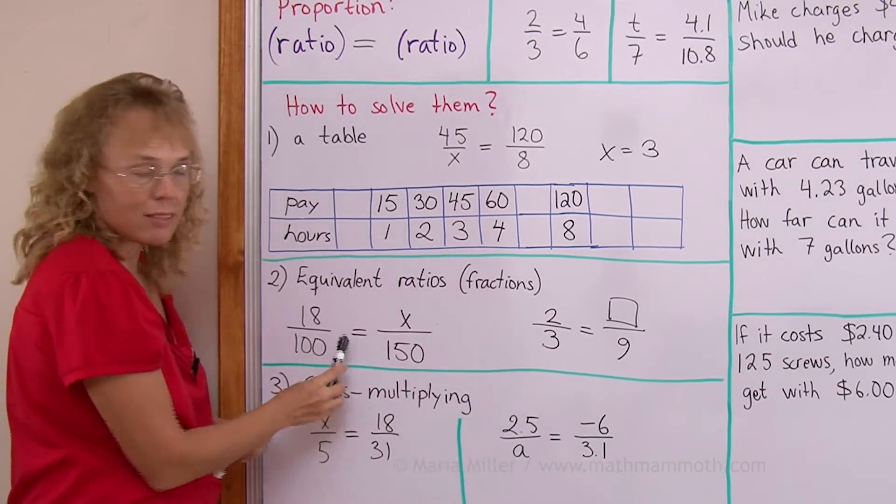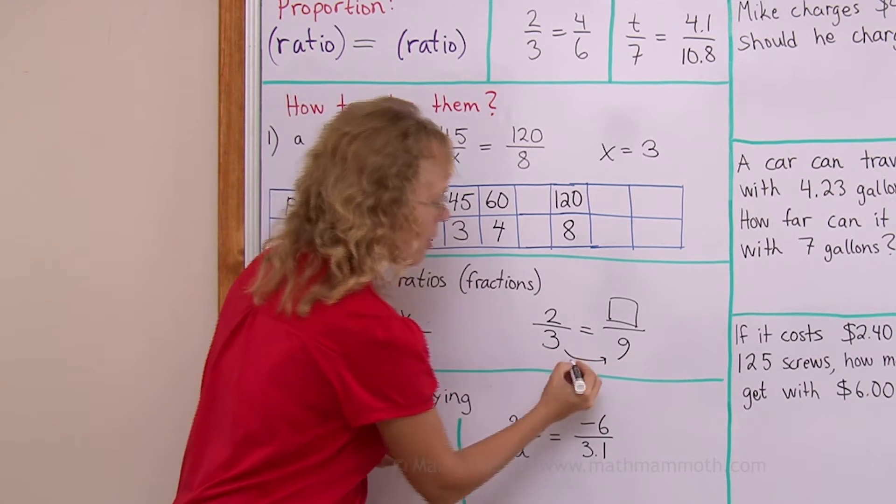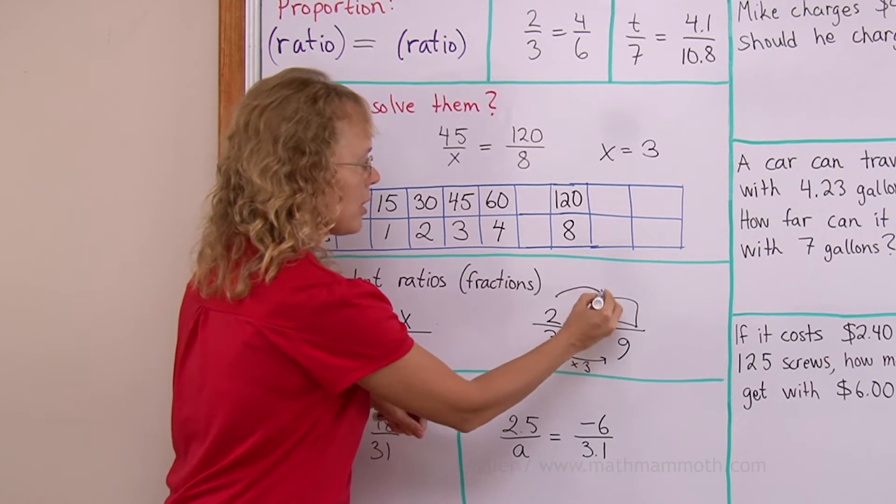And how did you solve this? It is the same kind of problem as here, right? And we did it this way. We think what number is 3 multiplied by to get 9. And then we use that same number here.